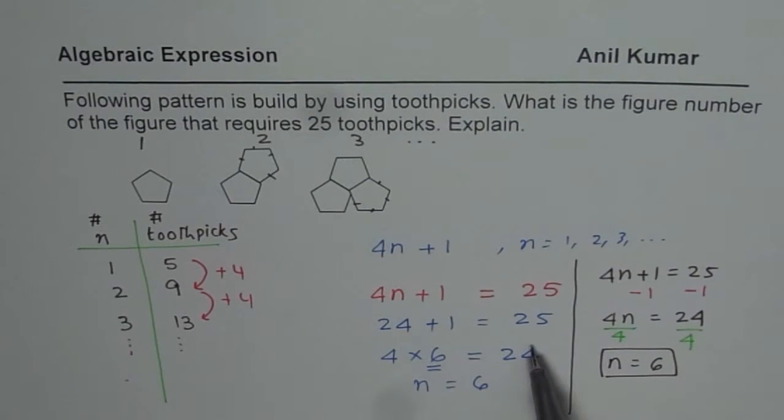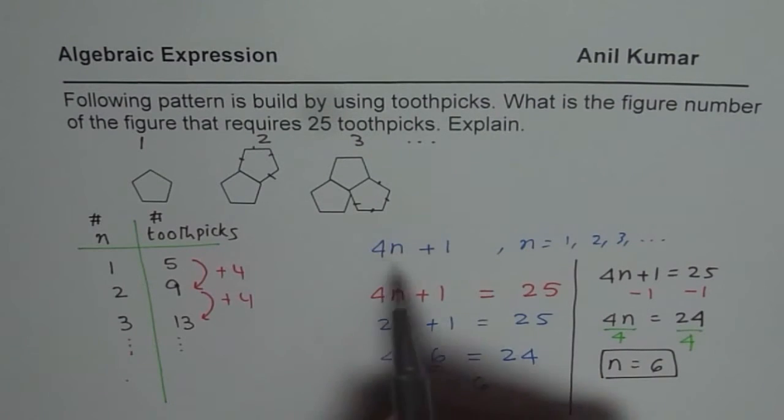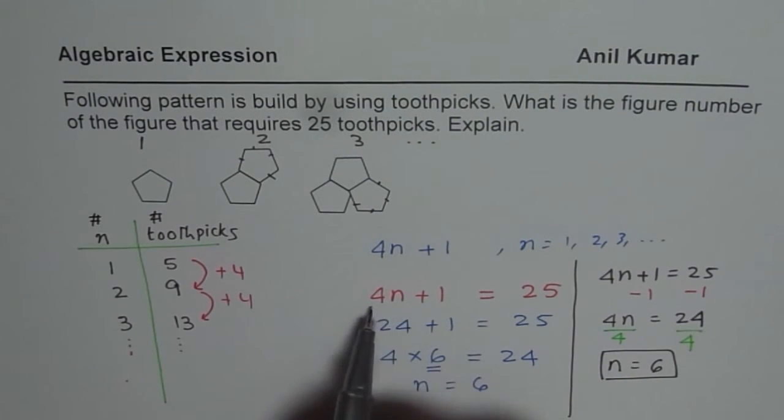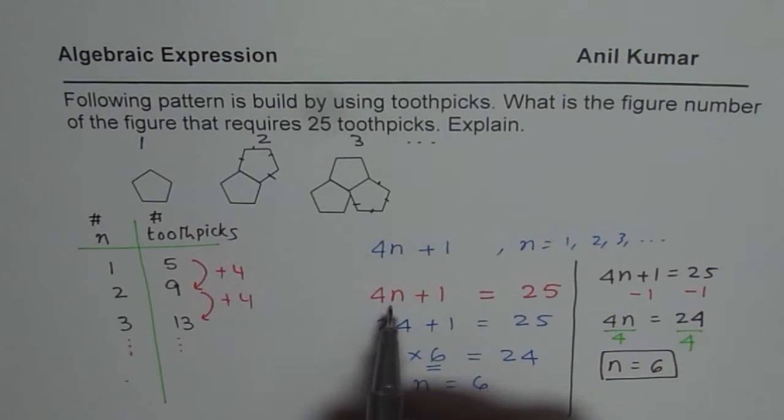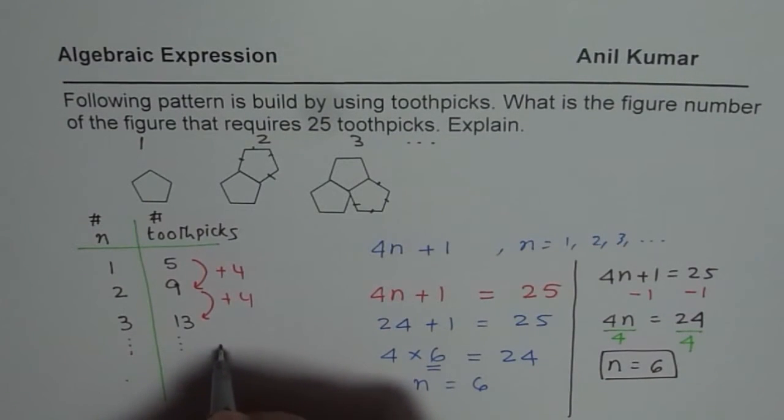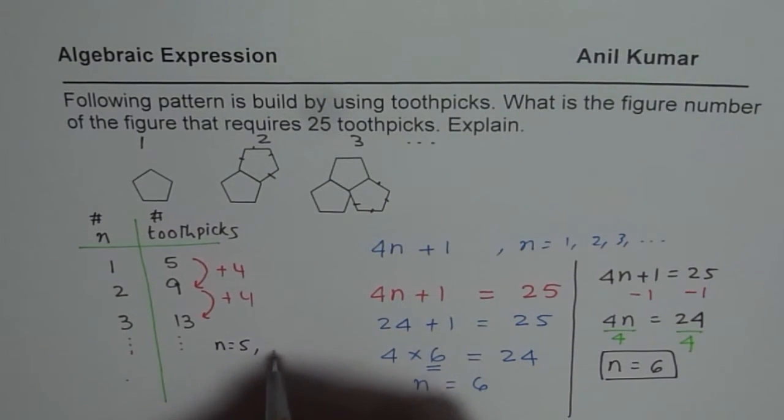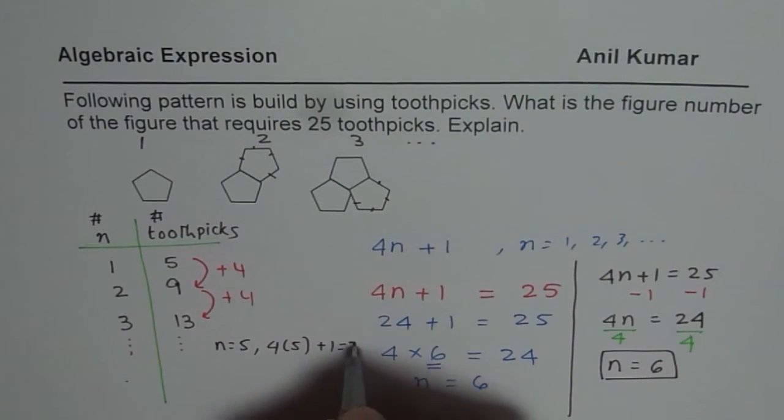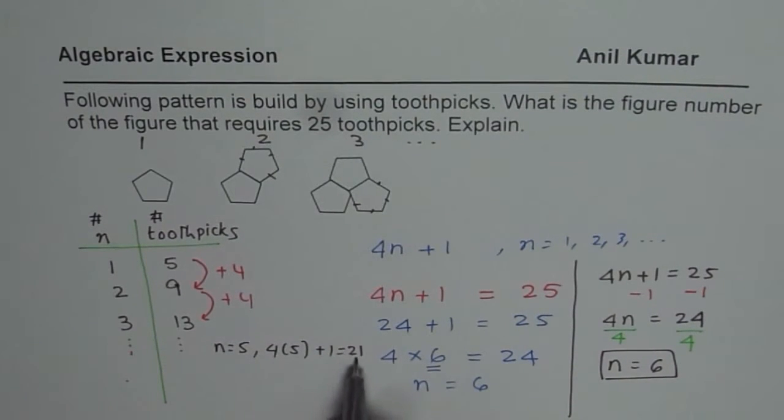Another method is trial and error, or you can say systematic approach, which is you could assume N to be some value. So we can say, well, let N be 5. If N is 5, then 4 times 5 is 20, and we get 21. Well, that does not work.